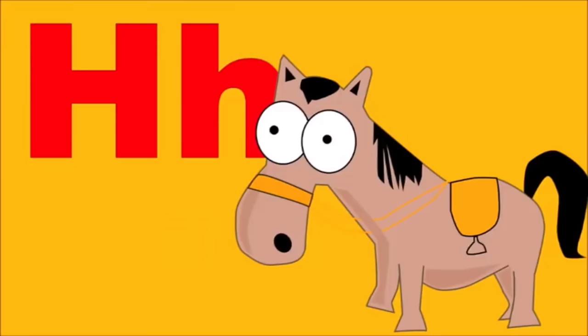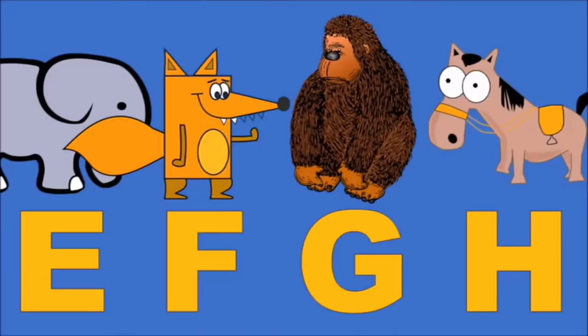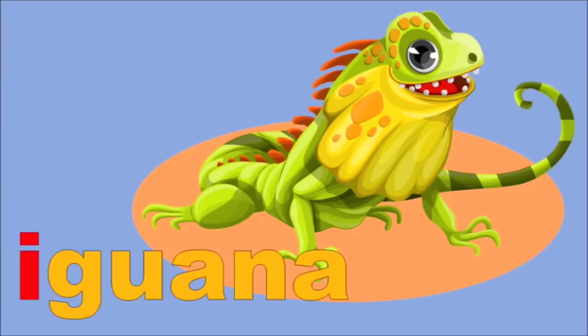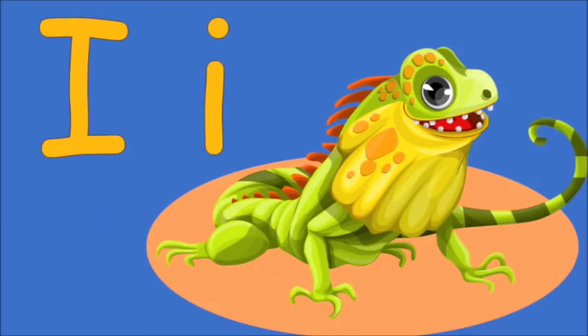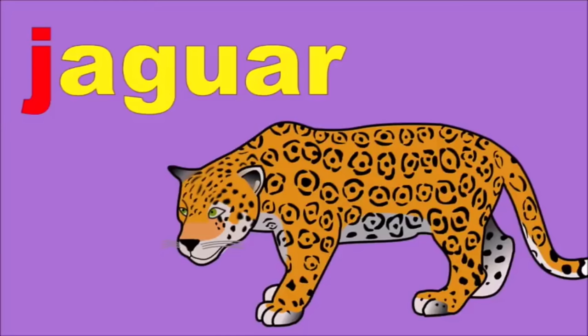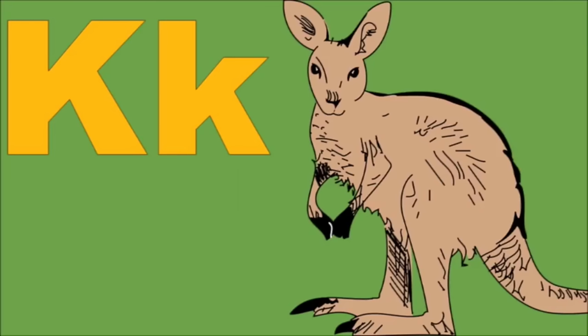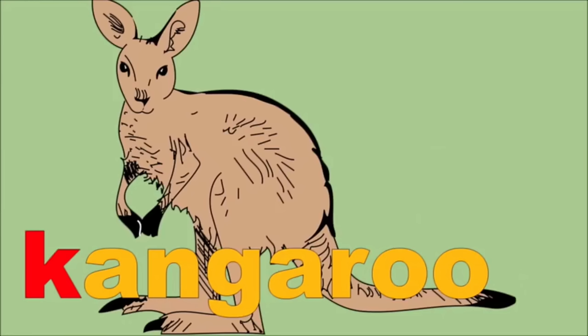H for Horse. H, H, Horse. I for Iguana. I, I, Iguana. J for Jaguar. J, J, Jaguar. K for Kangaroo. K, K, Kangaroo.